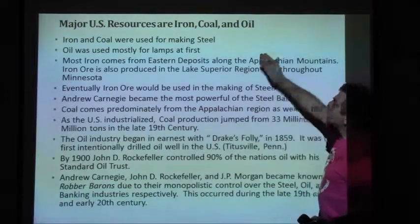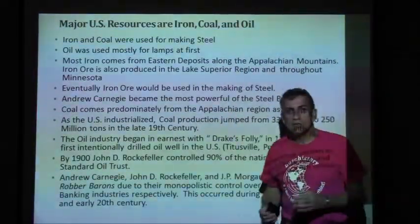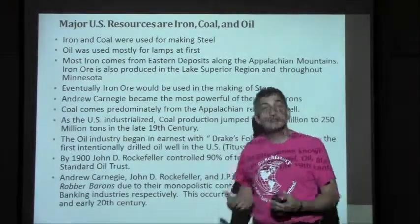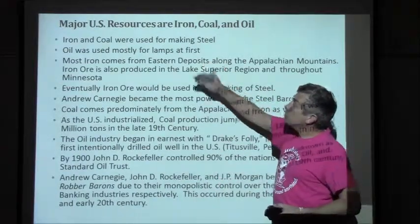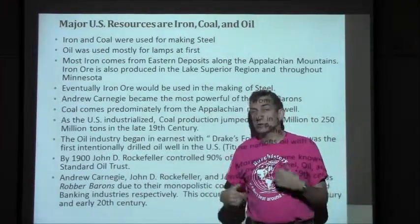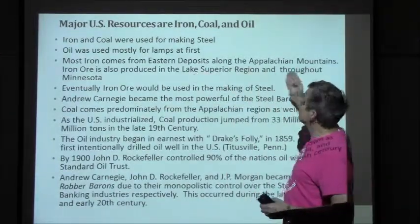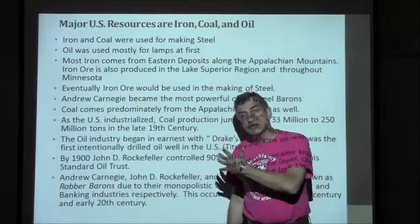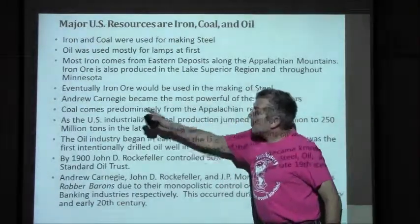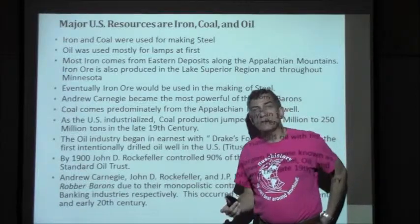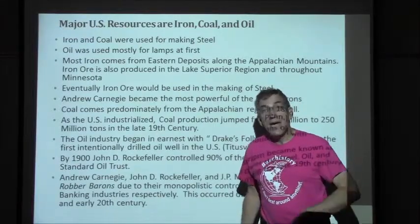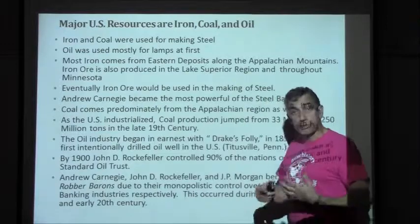Our major resources are iron, coal, and oil. Iron and coal were used for making steel — coal to fire the foundries, and iron is the raw material. Steel is an alloy, combined with other raw materials. Oil was mostly used for lamps at first, providing lighting in homes; it wasn't used as a heating source or fuel beyond that yet. Most iron comes from eastern deposits along the Appalachian Mountains, which are still a major mining community today. Iron ore became closely connected to the railroad, and we'd also get shipbuilding and eventually skyscrapers as we learned to harness steel for building purposes.